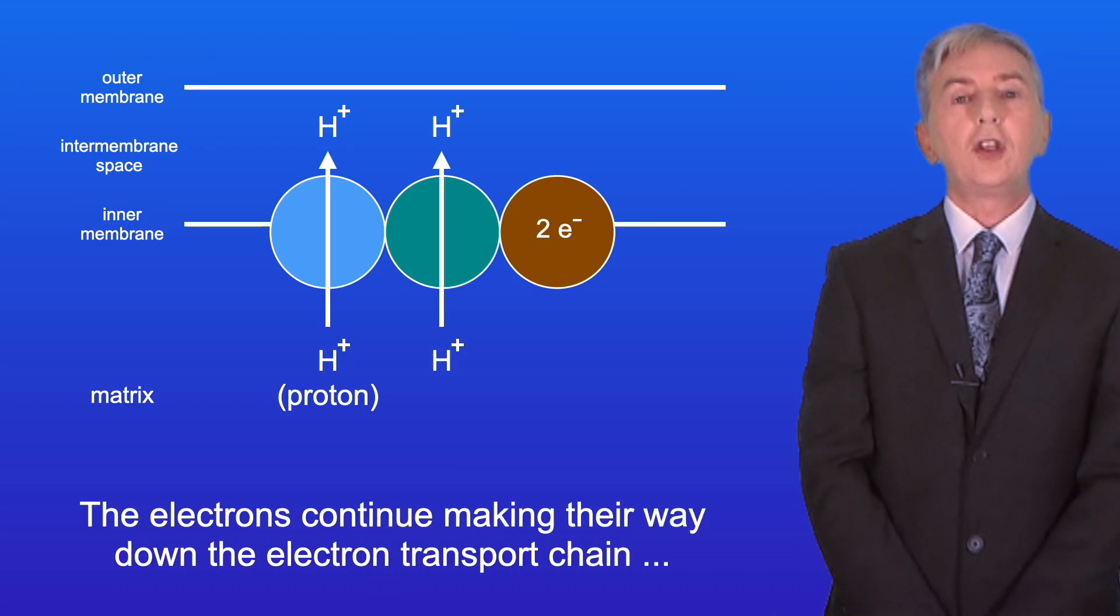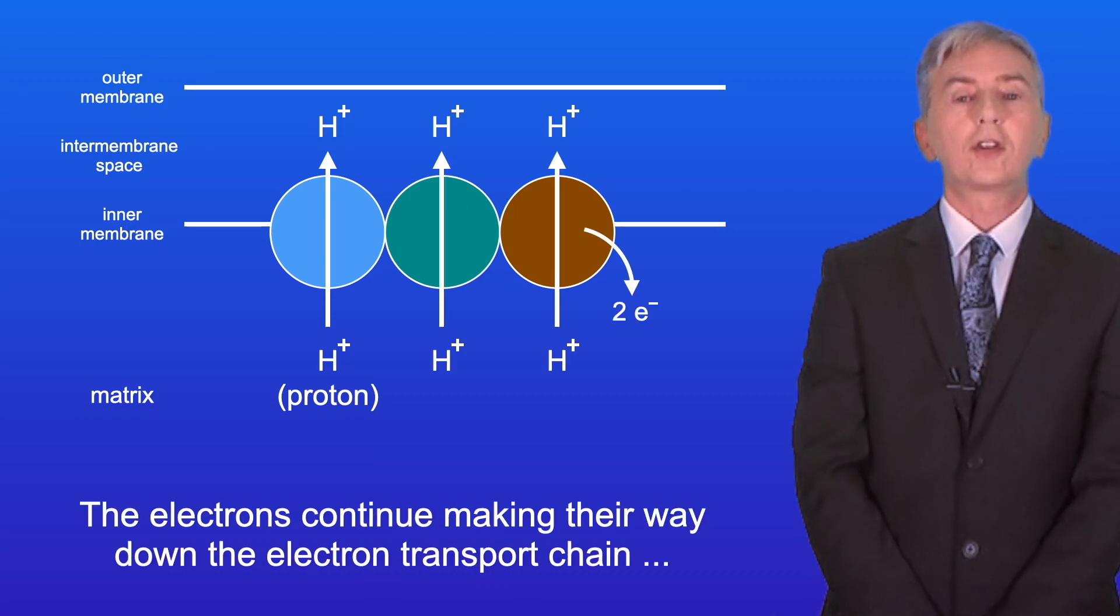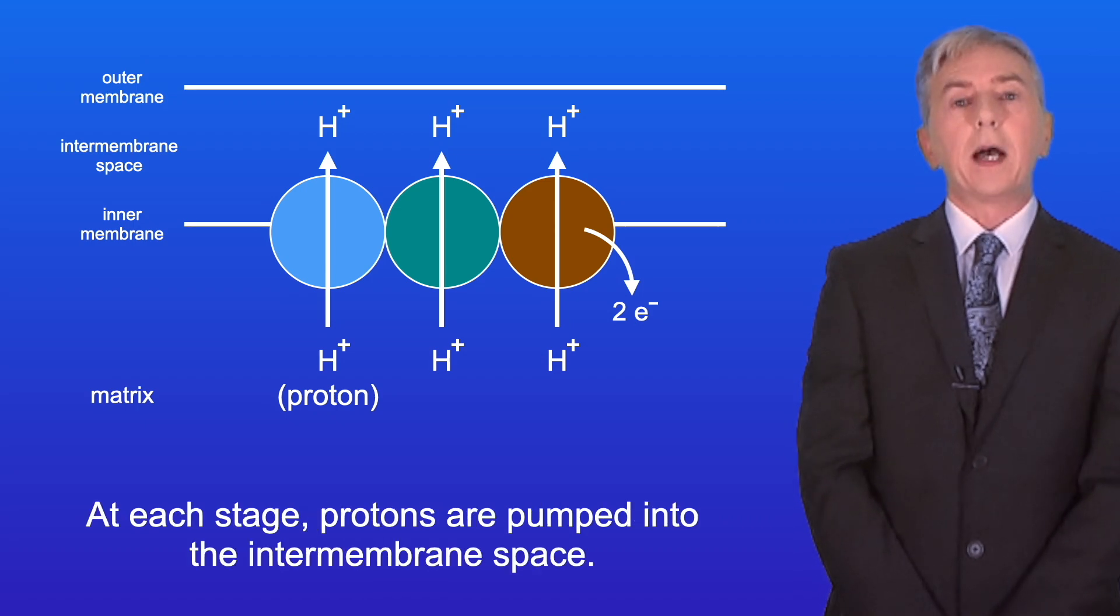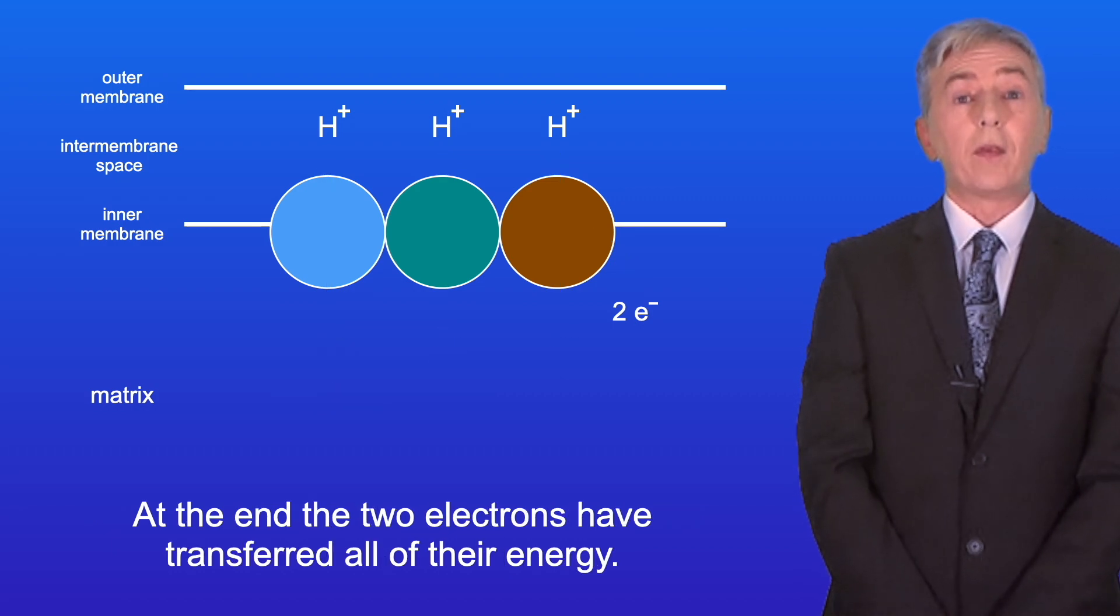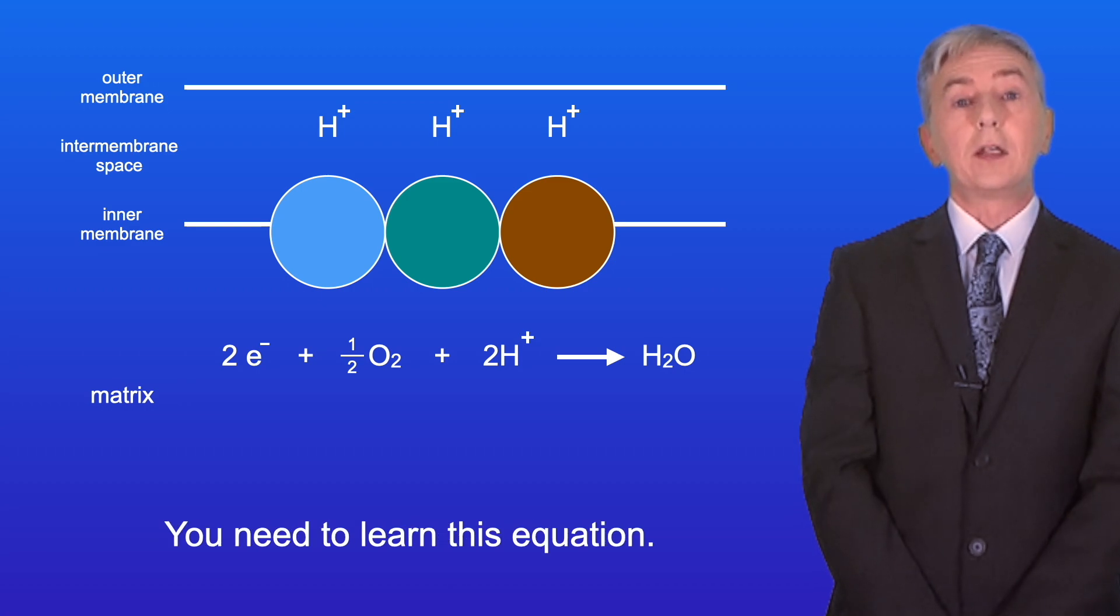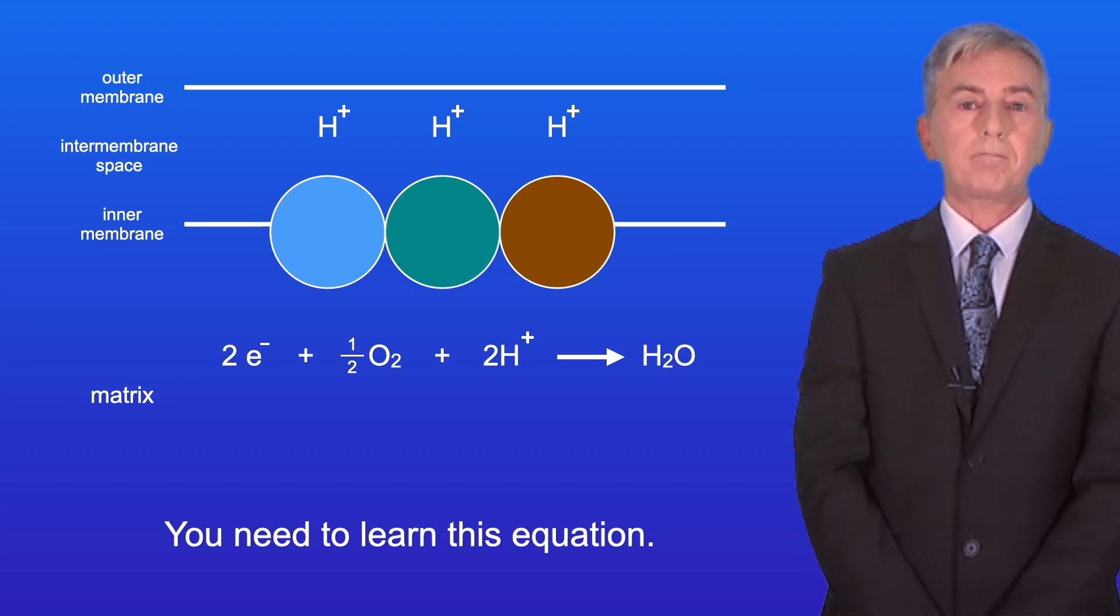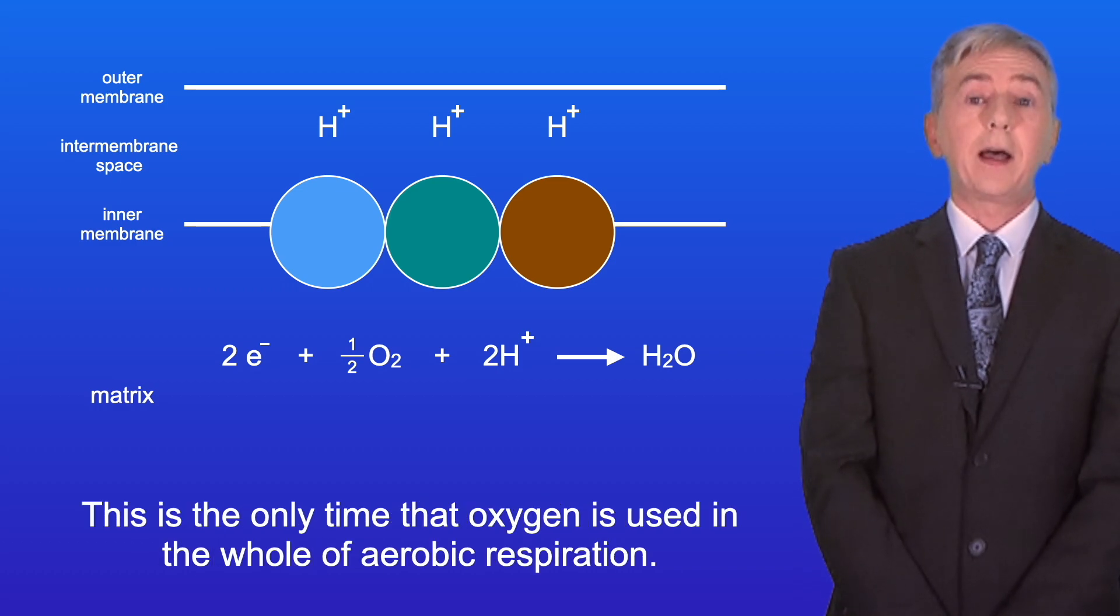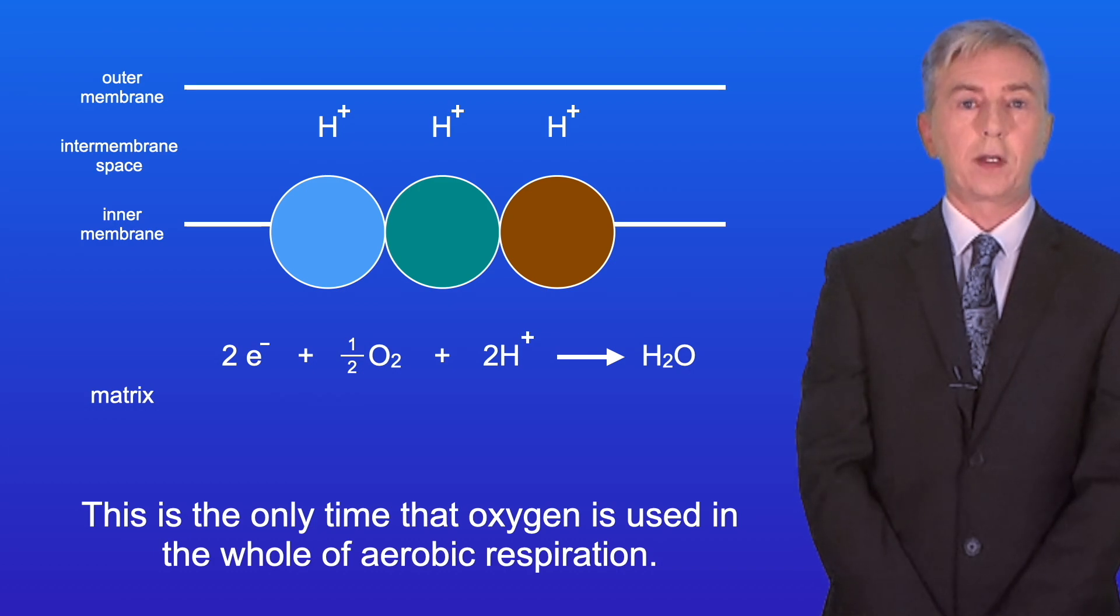The electrons continue making their way down the electron transport chain in a series of oxidation and reduction reactions, and at each stage protons are pumped into the intermembrane space. At the end the two electrons have transferred all of their energy, so these two electrons now combine with oxygen and two hydrogen ions to make a molecule of water, and you need to learn this equation. Oxygen is described as the final or terminal electron acceptor, and this is the only time that oxygen is used in the whole of aerobic respiration.